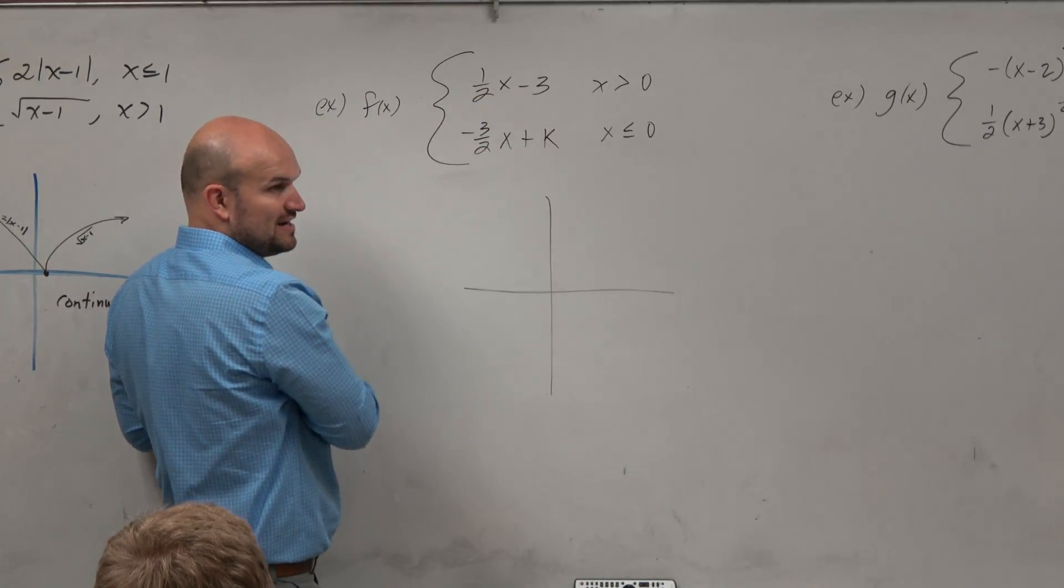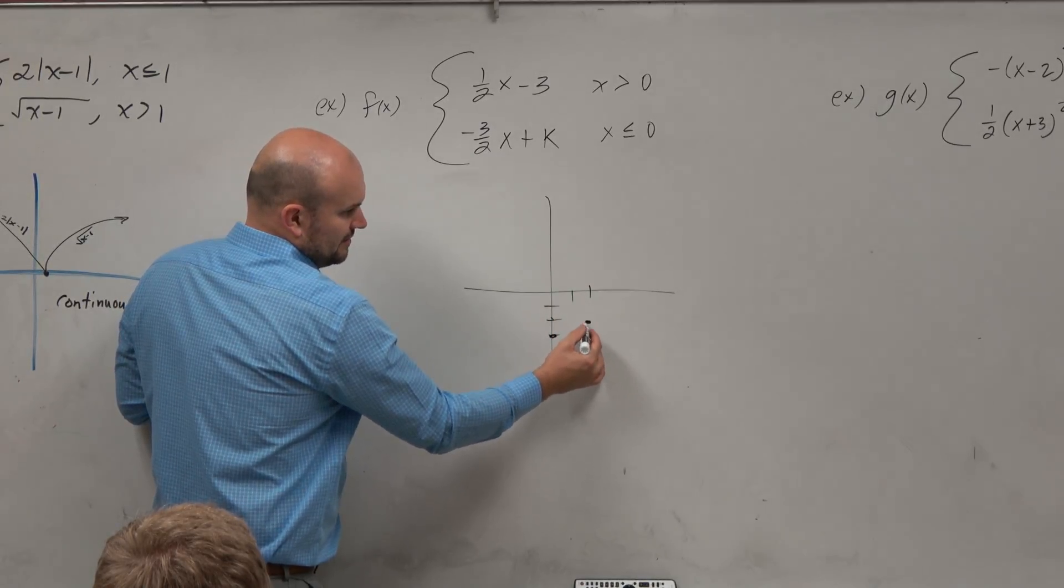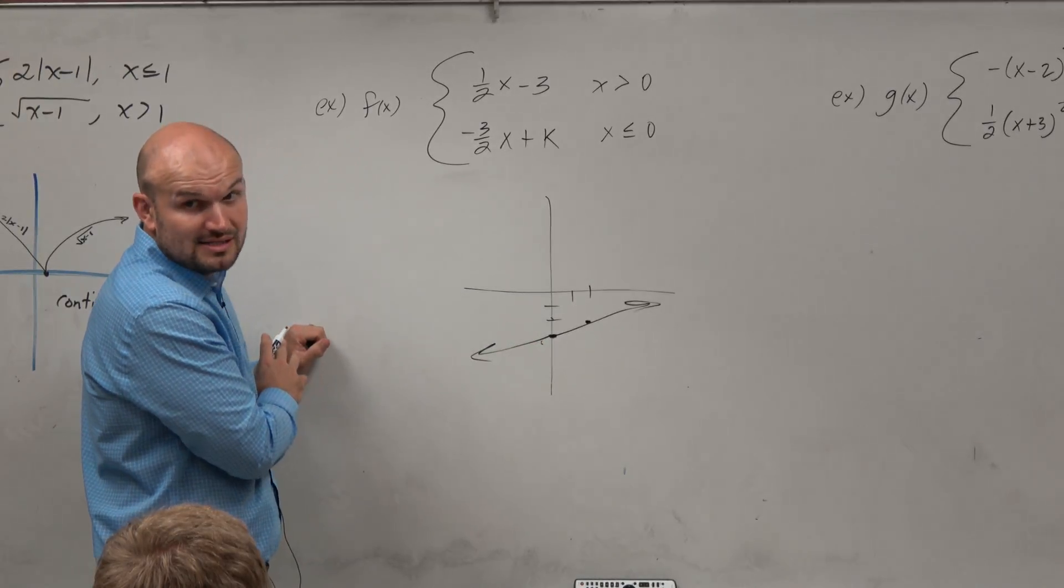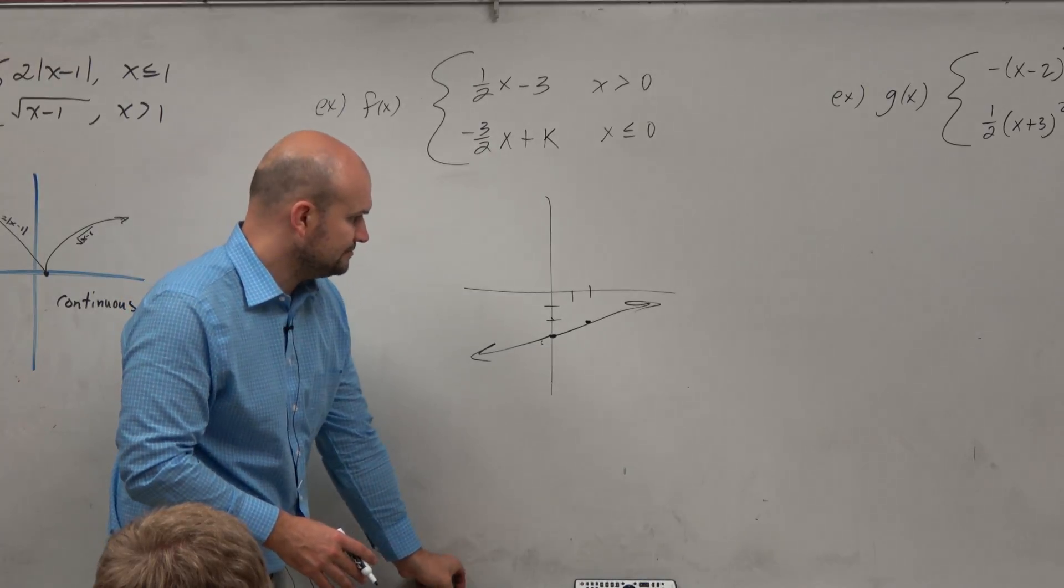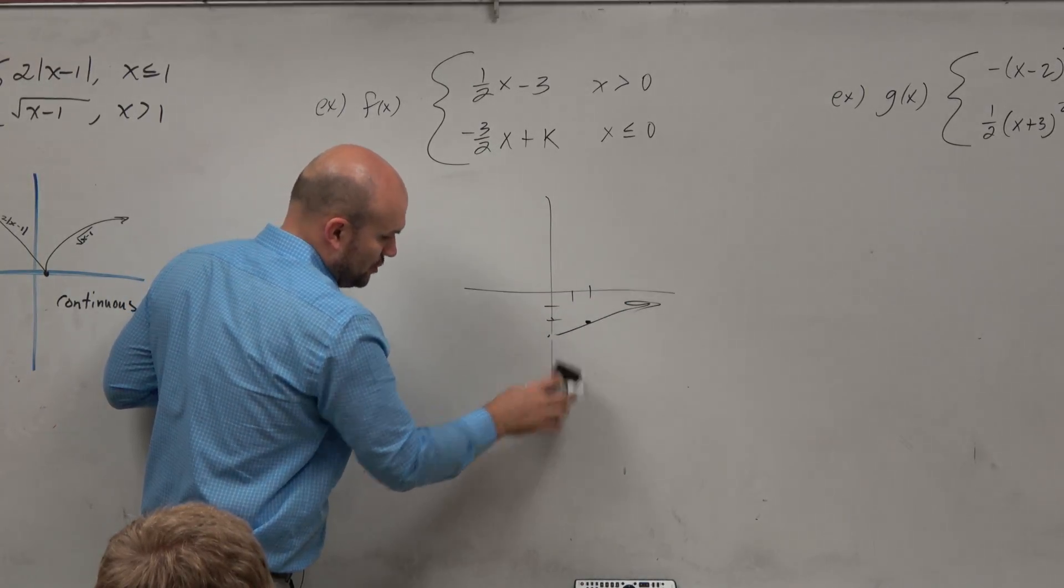Let's graph 1 half x minus 3. 1, 2, 3. Up 1 over 2. That graph looks something like that. And that's only for values that are x is greater than 0. So it's only going to be going from there. And that's an open circle.